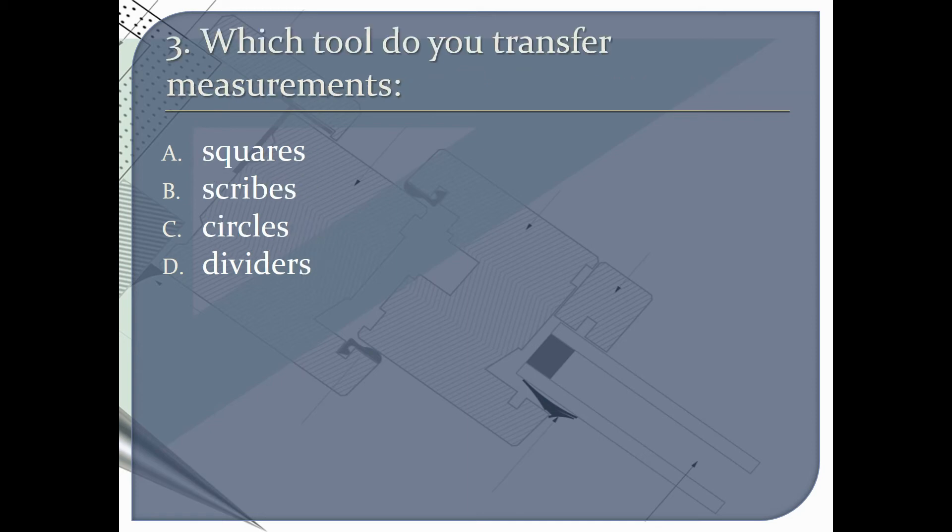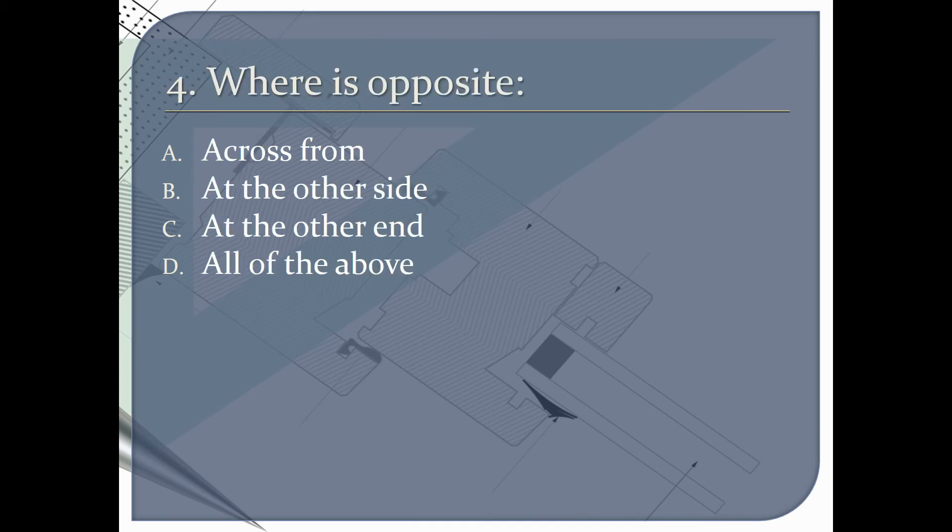Which tool do you transfer measurements with? A squares, B scribes, C circles, or D dividers. Where is opposite? Is it A across from, B at the other side, C at the other end, or D all of the above?